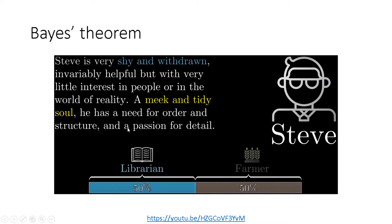I'll try to sum up what he talks about, but this is a very poorly explained version compared to his. In this video, he talks about Bayes' theorem and uses a research study from two psychologists. There is a guy named Steve, and this is a description about the personality of Steve. Steve is very shy and withdrawn, invariably helpful, but with very little interest in people or in the world of reality — a meek and tidy soul. He has a need for order and structure and a passion for detail.